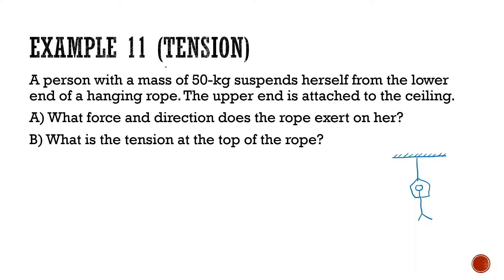Today we are going to be talking about tension with dynamics and Newton's laws. A person with a mass of 50 kilograms suspends herself from the lower end of a hanging rope. The upper end is attached to the ceiling. What force and direction does the rope exert on her? There are going to be two forces acting on this person: gravity and the rope pulling her up, which is the force of tension.